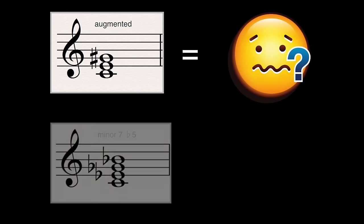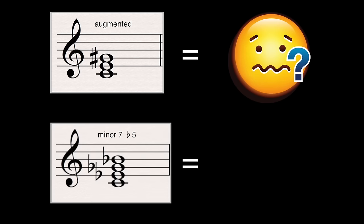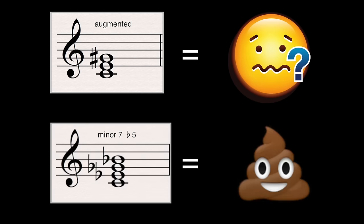I always found it a little bit unfortunate that teachers stopped with major being happy and minor being sad. For example, what is augmented? Or minor 7b5 for that matter. This emotional understanding of ear training is extremely important because it's how everybody experiences music. Everybody has music affect them in some way. It's a side of ear training that unfortunately rarely gets explored.